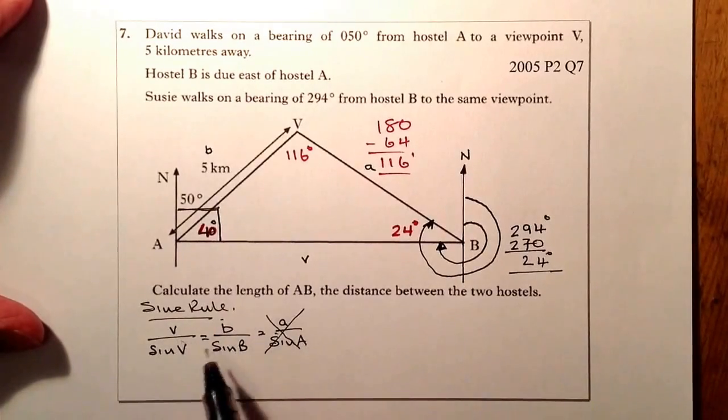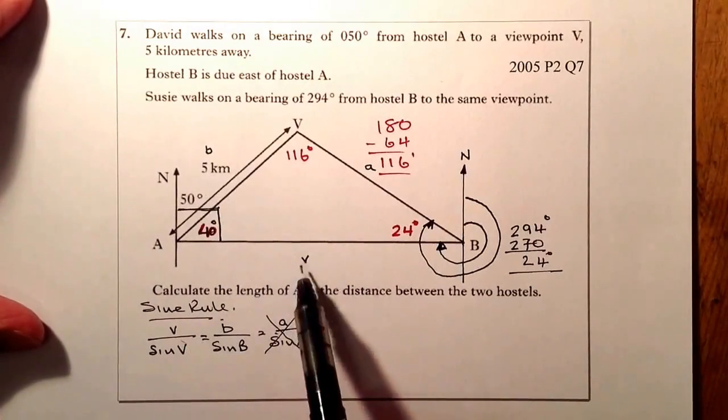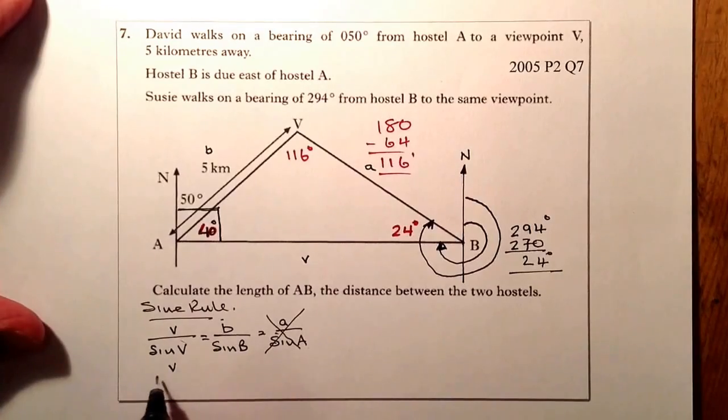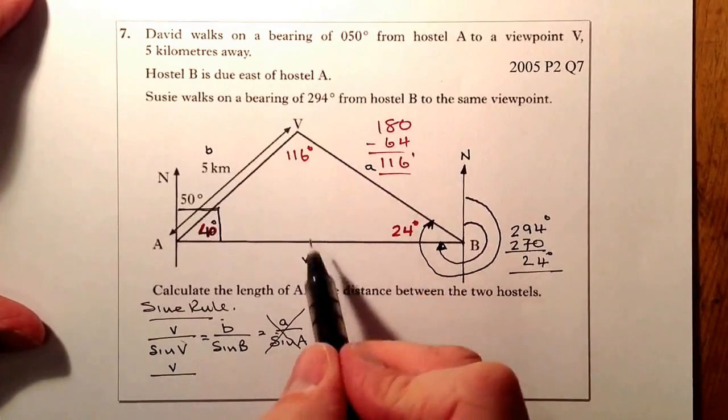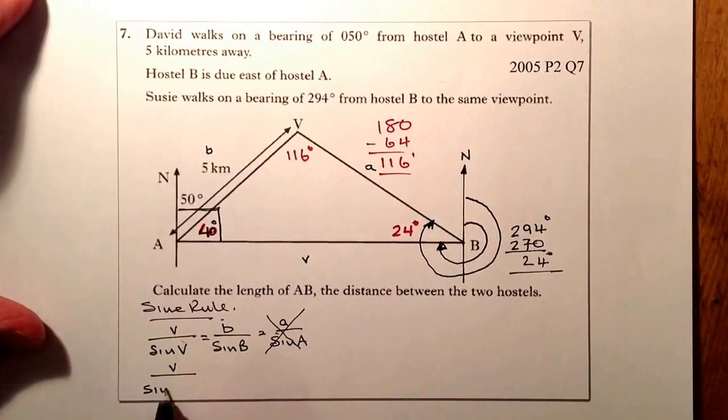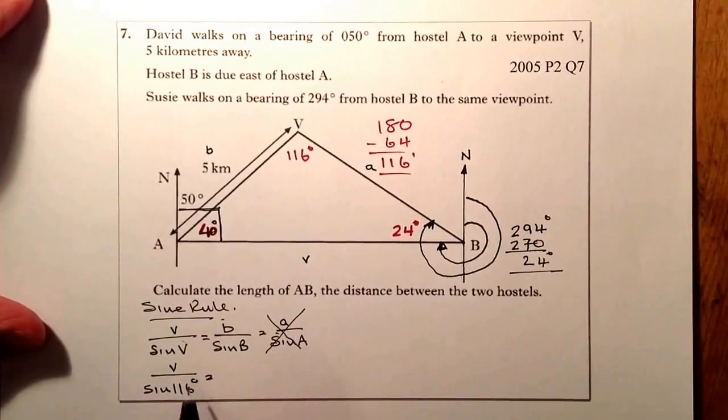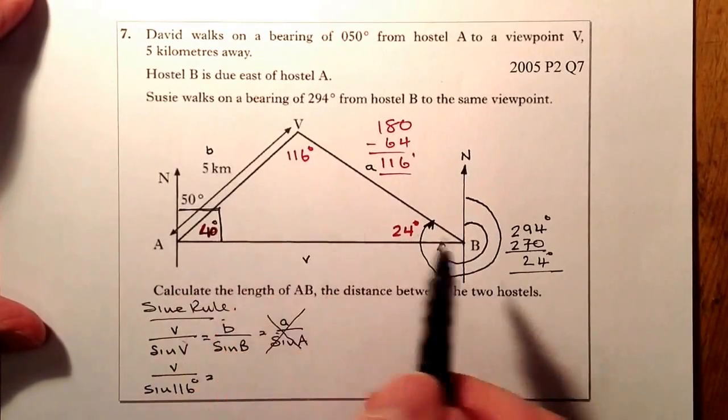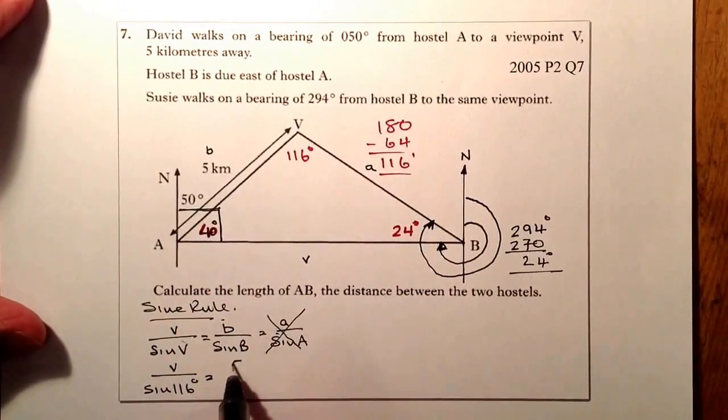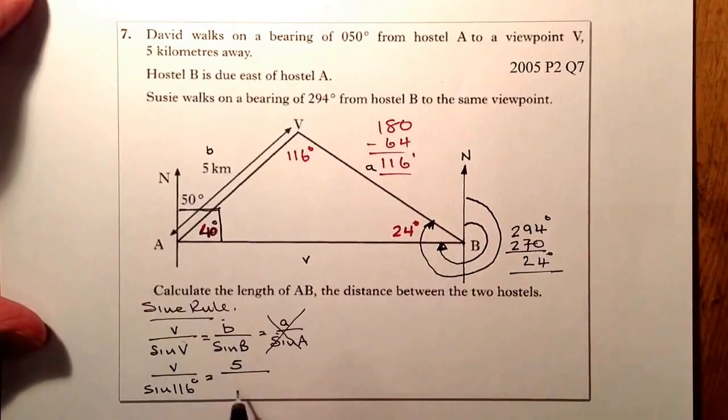What I'm going to do is, first of all, I'm going to substitute the values that I know. So I know that v is the one that I'm trying to work out. So v, all divided by sine 116, is going to be equal to b, which is going to be across from b, it will be that side there, 5, divided by sine of 24 degrees.